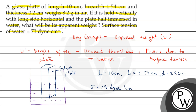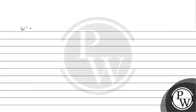Now let's substitute the values into the formula. W dash equals weight of the plate, written as m times g, minus the upward thrust due to water, written as length times breadth divided by 2 — because half the plate is immersed — times thickness d, times density of water, times g, plus force due to surface tension, written as sigma times (length plus thickness) times 2, because the rectangular plate has two faces.